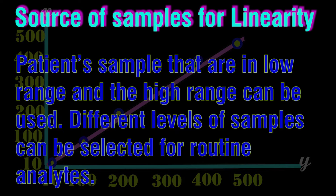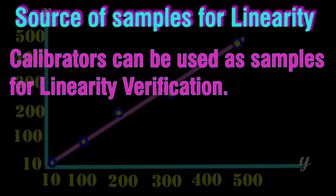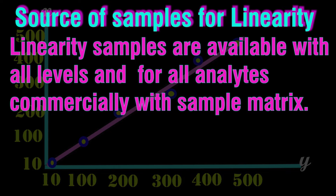Sample source materials and acceptability criteria are determined by the lab director. Patient samples can be used; high-level samples can be preserved and used with different dilutions for different concentrations. Standard reference materials can be used for calibration verification. Calibrators can be used, and commercially available kits are used for linearity or calibration verification. The basic requirement is that materials must cover the minimum and maximum reportable range and analytical measurable range, and samples can be diluted at any intervals.